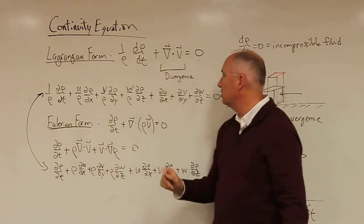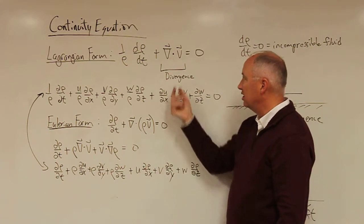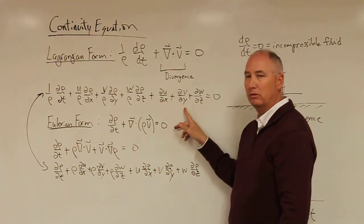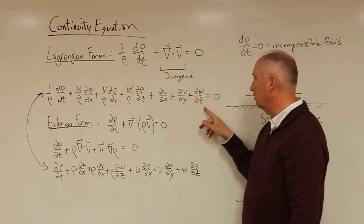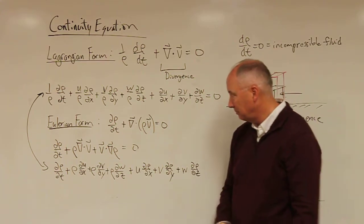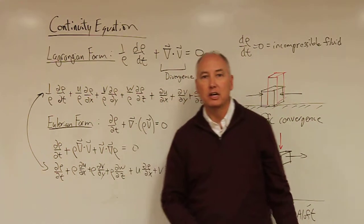And then we have the divergence component, which is delta v, which is partial u over partial x plus partial v over partial y and partial w over partial z equals zero. That's the full form of the continuity equation.